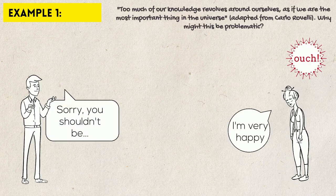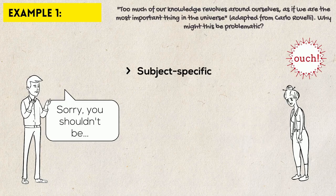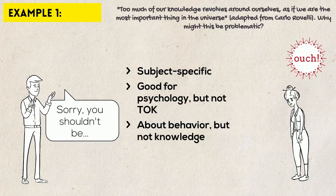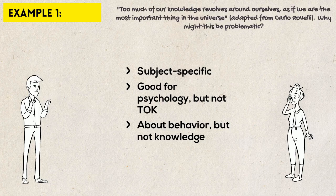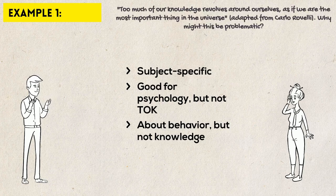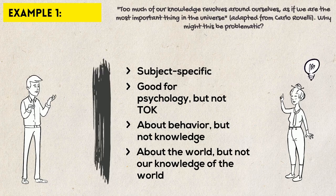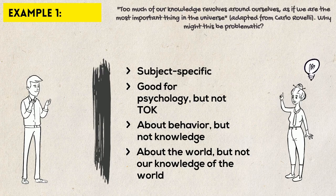It's subject-specific. It's a good example for psychology, but not a good example for TOK. It is about the behavior of people, but it is not about our knowledge of the behavior of people. It is about what Piaget discovered, but not about how he discovered it. It is about the world — about the way people are — but it is not about our knowledge of the world, our knowledge of the way people are, which should be the focus of human sciences.